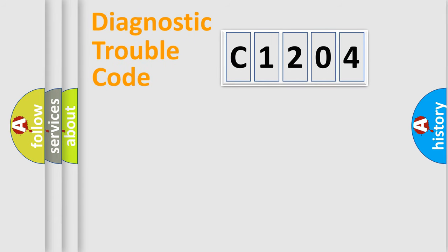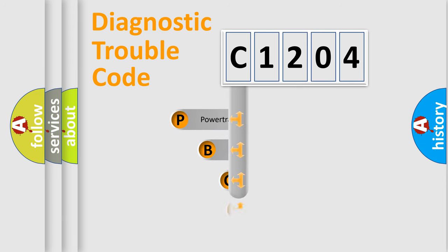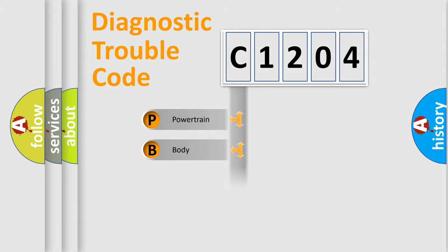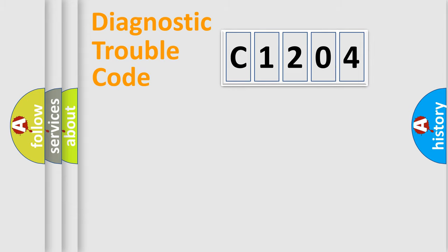Let's look at the history of diagnostic fault code composition according to the OBD2 protocol, which is unified for all automakers since 2000. We divide the electric system of the automobile into four basic units: Powertrain, Body, Chassis, and Network. This distribution is defined in the first character of the code.